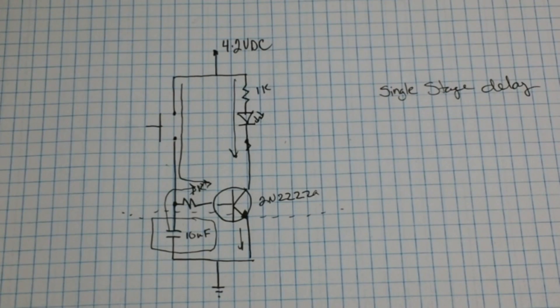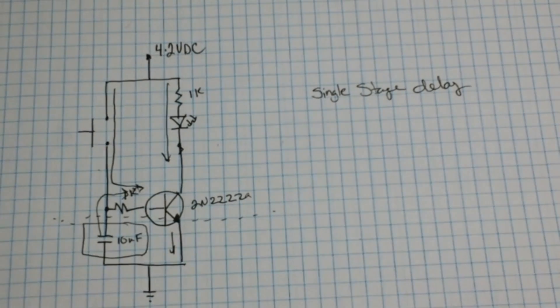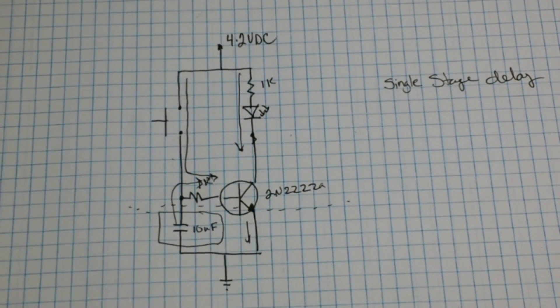Hey what's up guys, today we are going to talk about another classic circuit you should know, and this circuit is called the single stage delay. The reason it's called the single stage delay is it only uses one transistor.